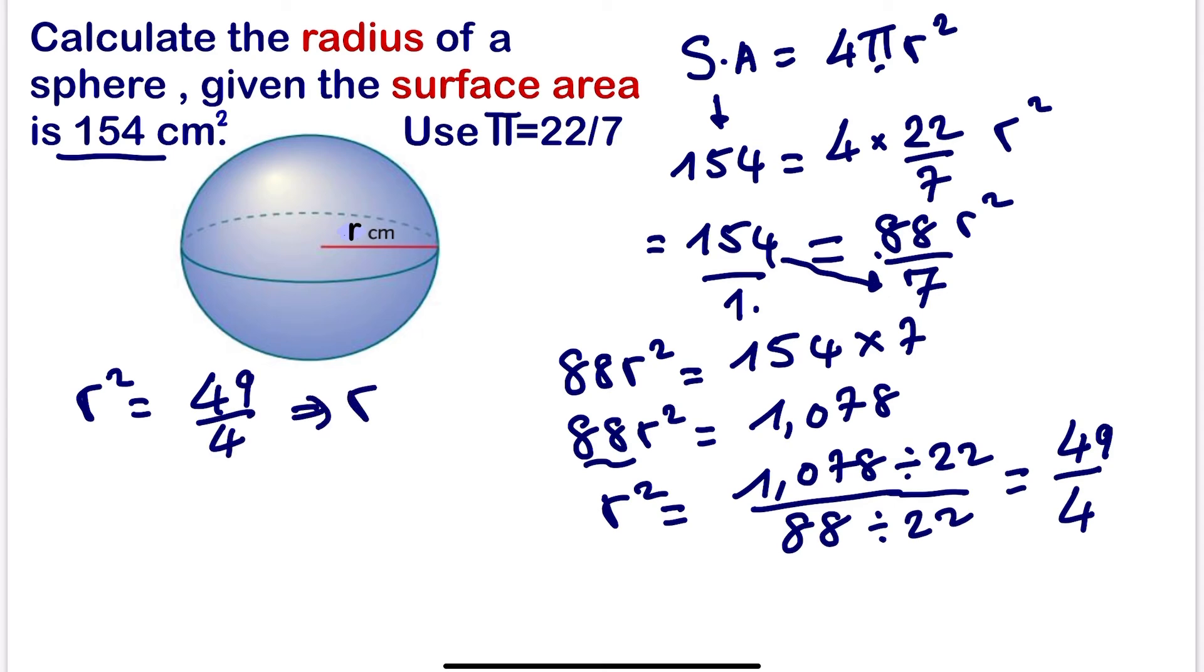So r will be equals to the square root of 49 over 4. R can be the same as, we can use property of 49/4. So this is square root of 49 divided by the square root of 4. So this will give us 7 divided by 2 which is equals to 3.5 as well.